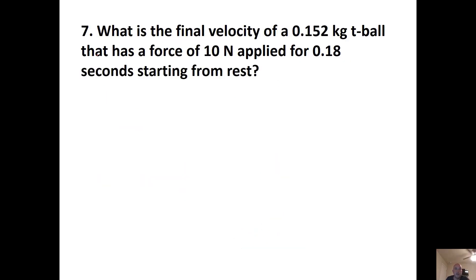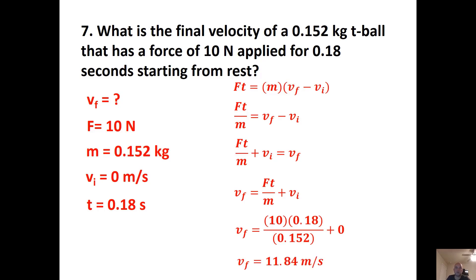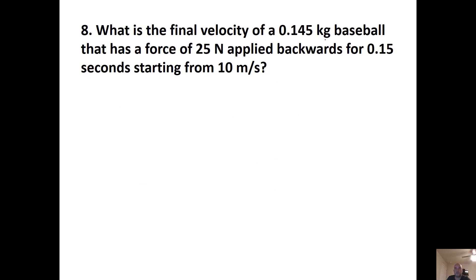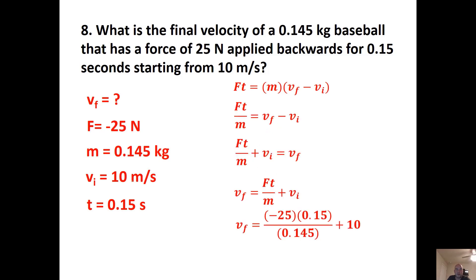What's the final velocity of a 0.152 kg T-ball with 10 newtons applied for 0.18 seconds starting from rest? Rearrange Ft = m(vf − vi): multiply to get J, divide by mass, then add vi. The answer is 11.84 m/s. What's the final velocity of a 0.145 kg baseball with 25 newtons applied backwards for 0.15 seconds, starting at 10 m/s? Same equation, but with initial velocity of 10 — the answer is −15.86 m/s.